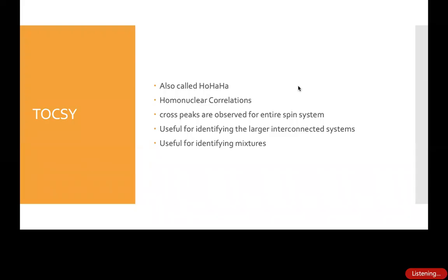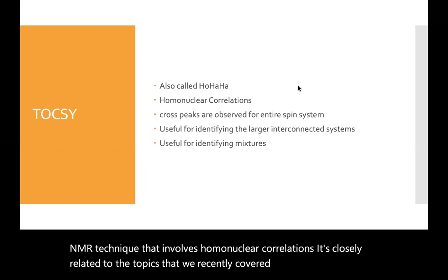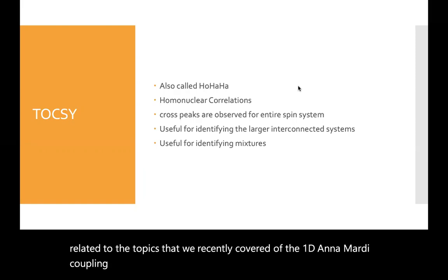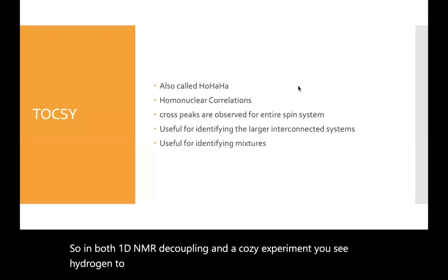Hello, we're going to start talking about TOCSY today. This is a 2D NMR technique that involves homonuclear correlations. It's closely related to the topics that we recently covered of the 1D NMR decoupling experiment and the COSY. So in both 1D NMR decoupling and a COSY experiment, you see hydrogen to hydrogen couplings two to three bonds away.